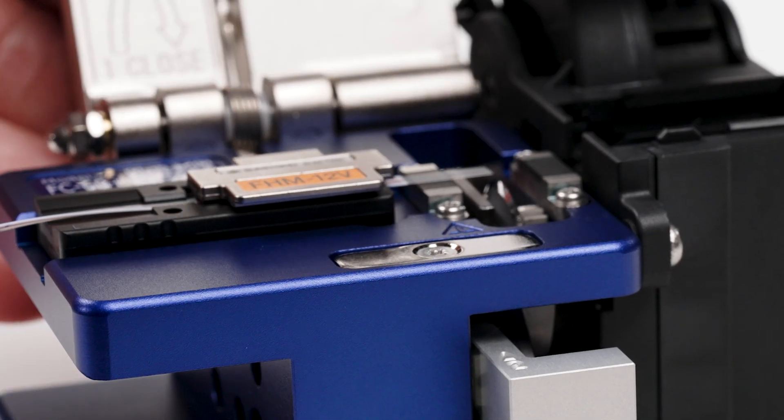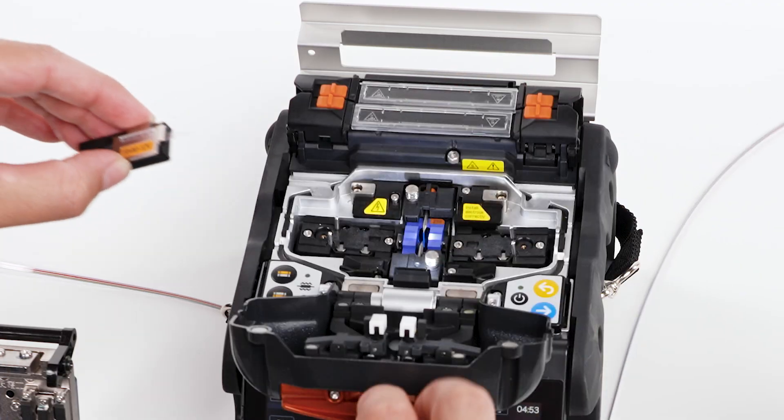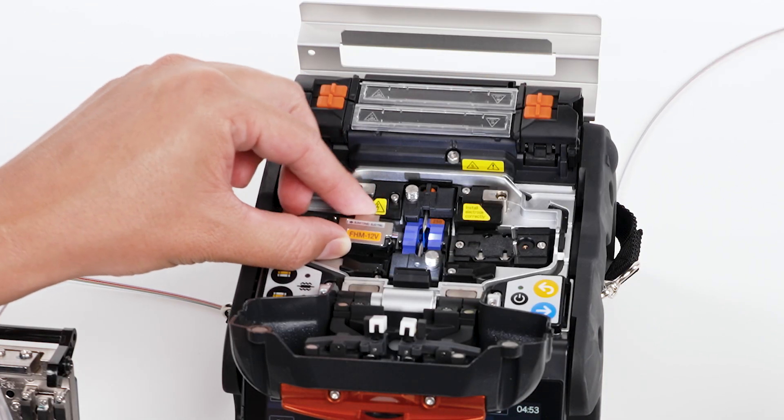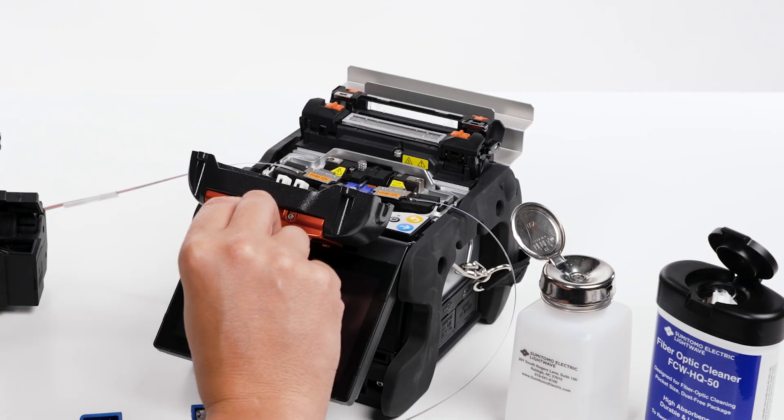Prepared ribbon fiber should then be placed immediately into the fusion splicer to keep fibers from collecting dust and incurring damage. Repeat these steps for the opposite side ribbon fiber.